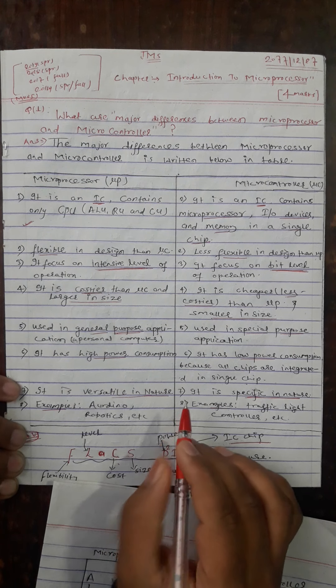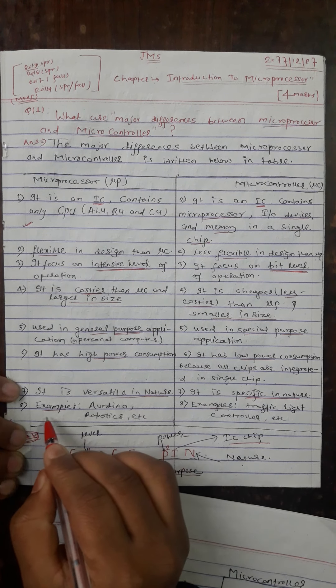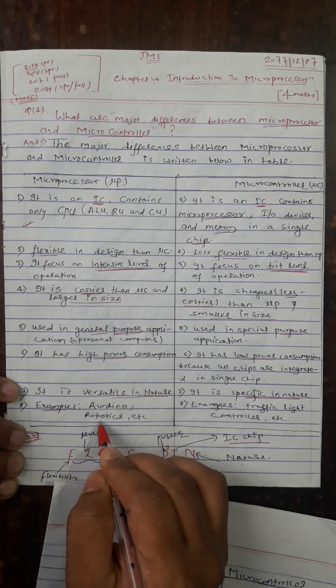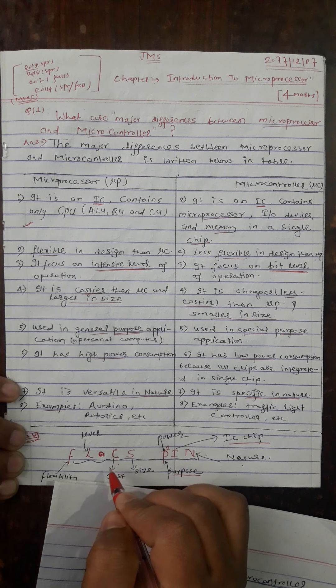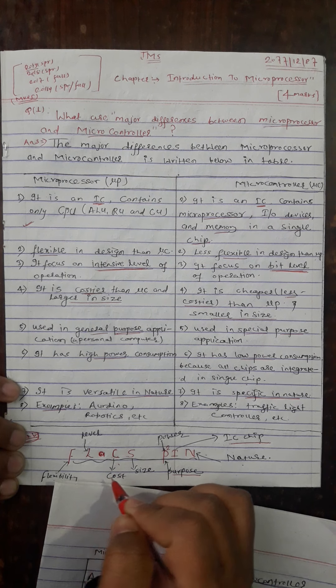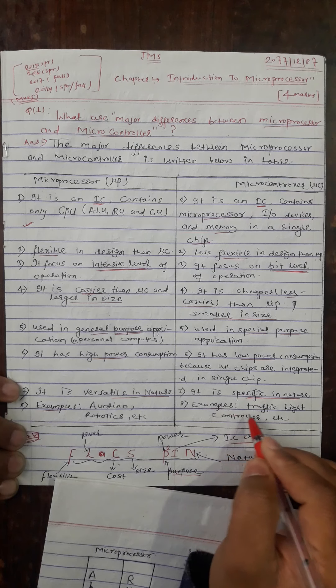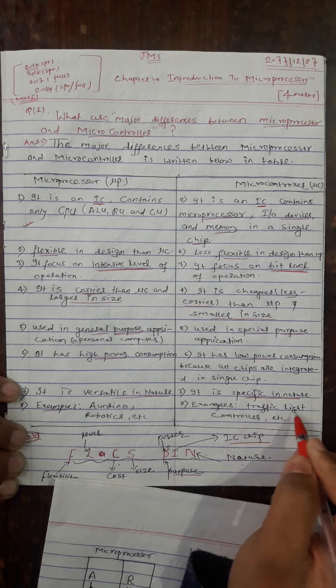Examples include Arduino for microcontrollers, and microprocessors are used in robotics and traffic light controllers. Thank you very much for watching.